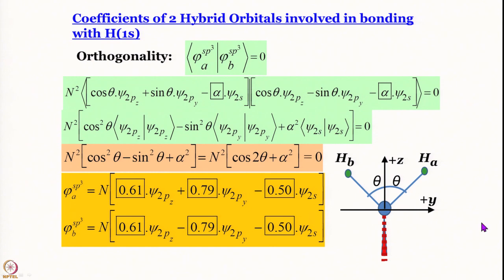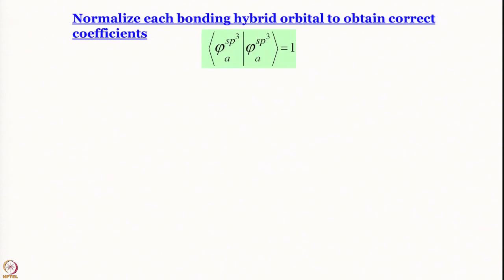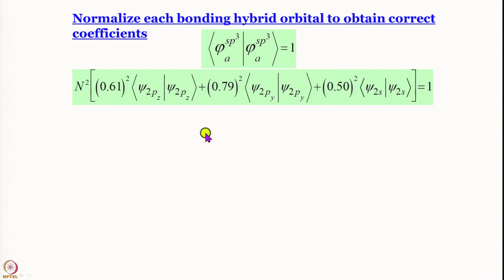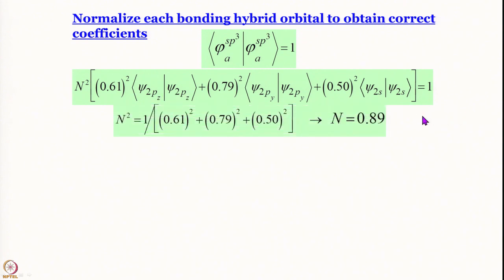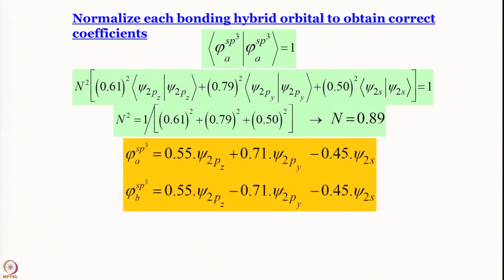What remains is to find n by normalization. Setting the norm of φa equal to 1 — all cross terms vanish and each basis orbital is normalized — we get n = 0.89. Multiplying through, we obtain the final expressions for φa and φb with coefficients 0.89·sin θ for pz, 0.89·cos θ for py, and 0.89·0.5 for the 2s term.